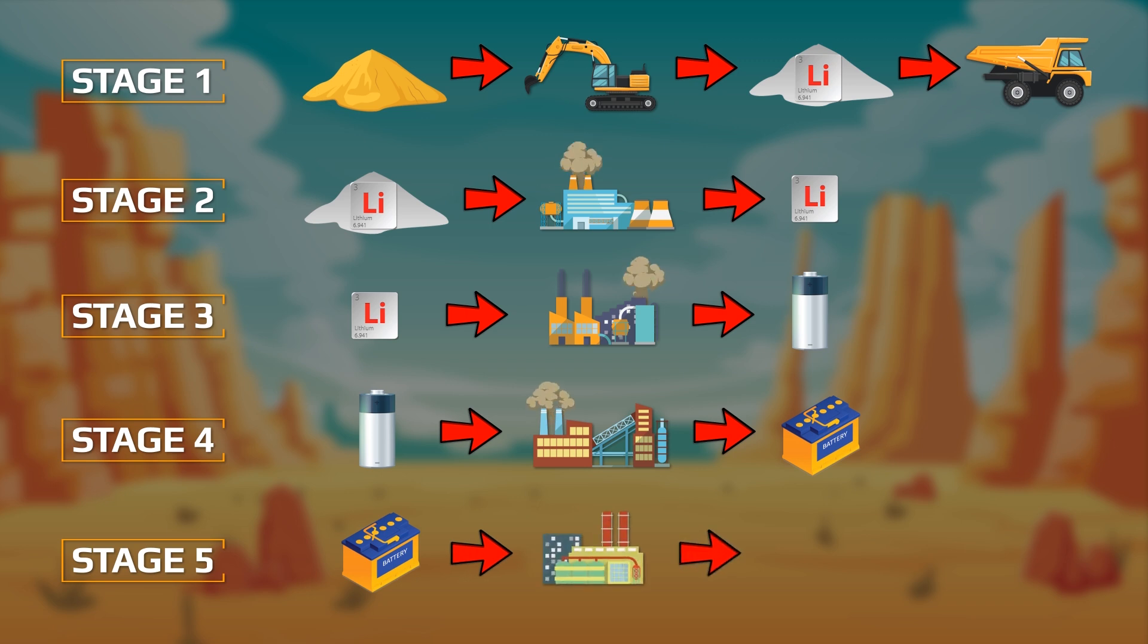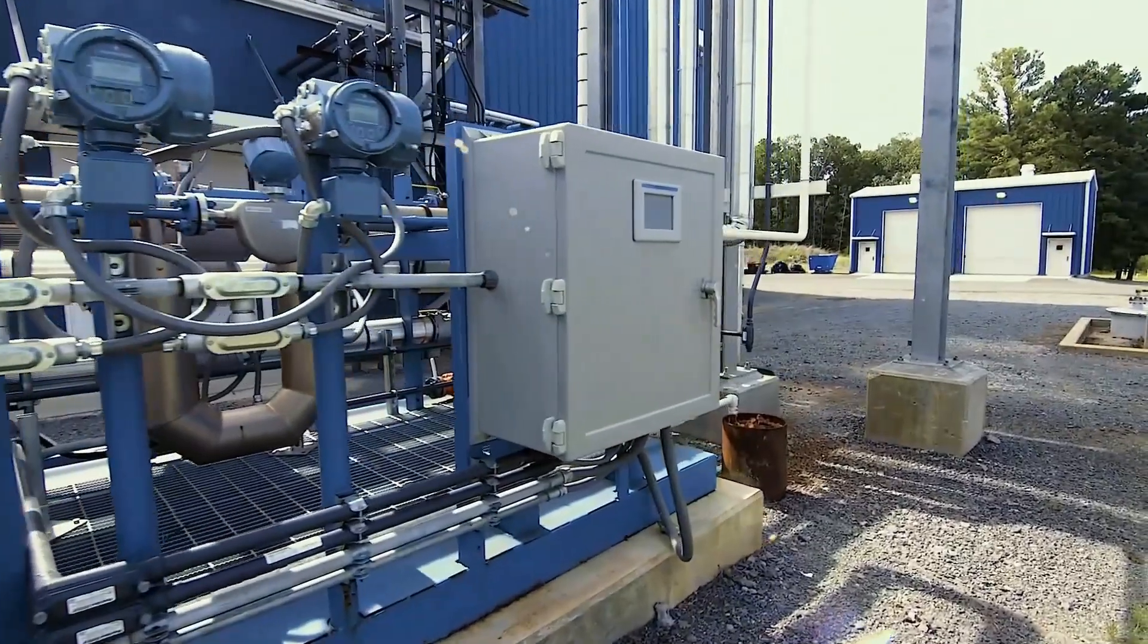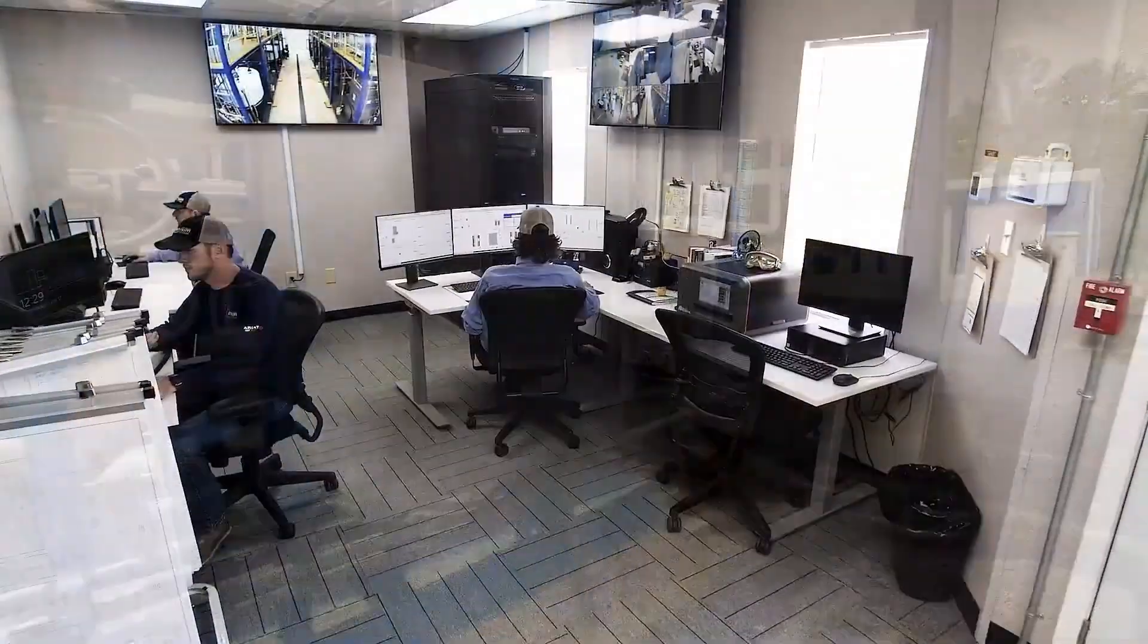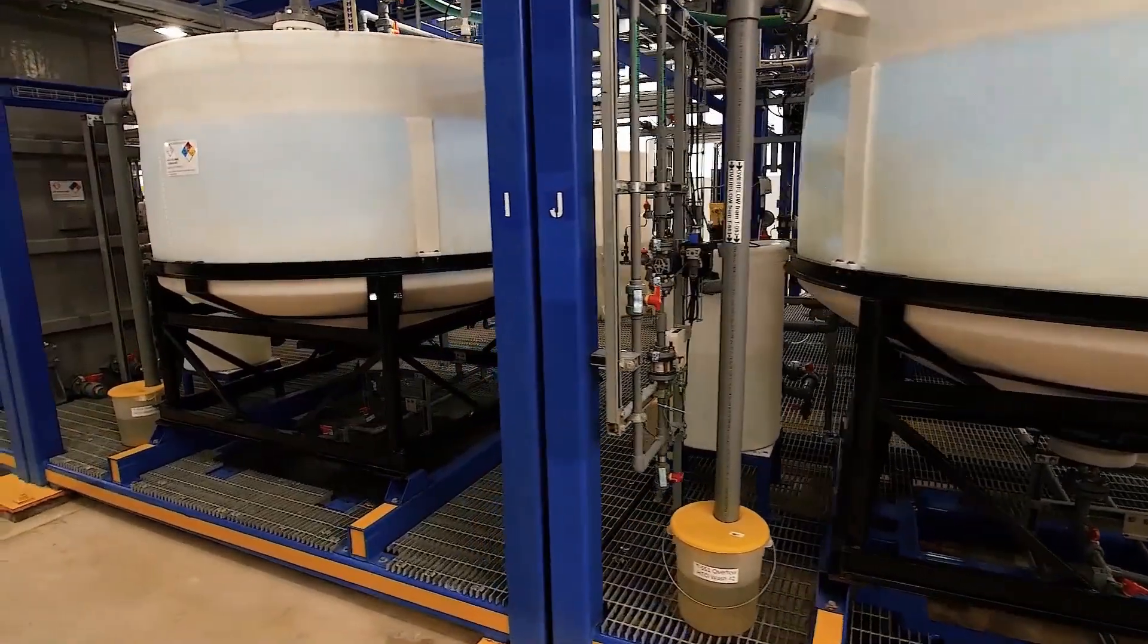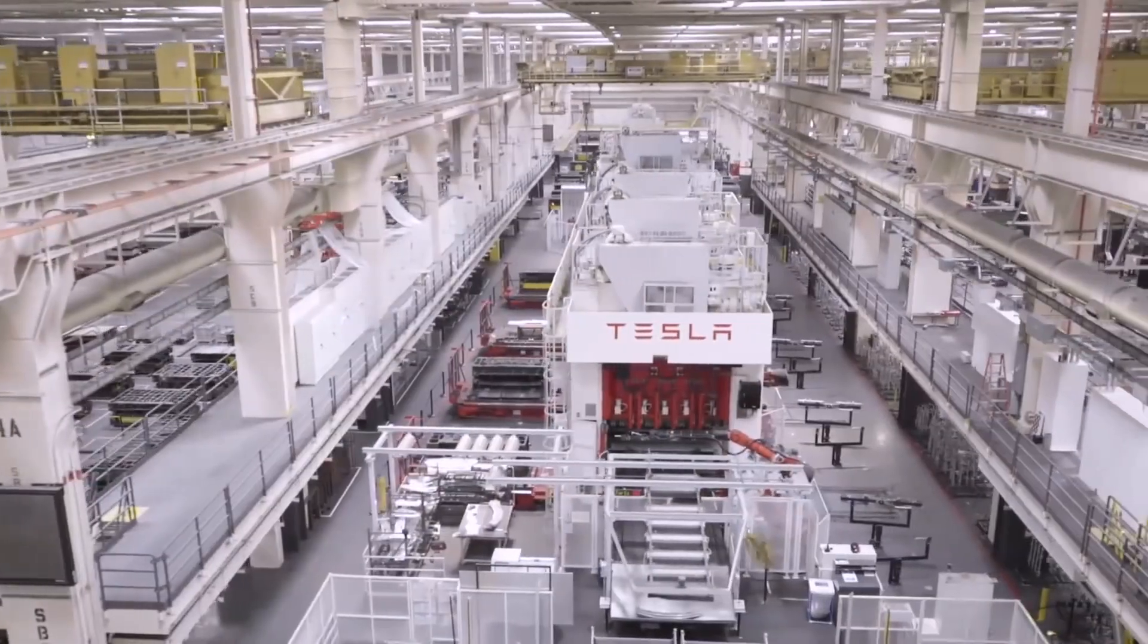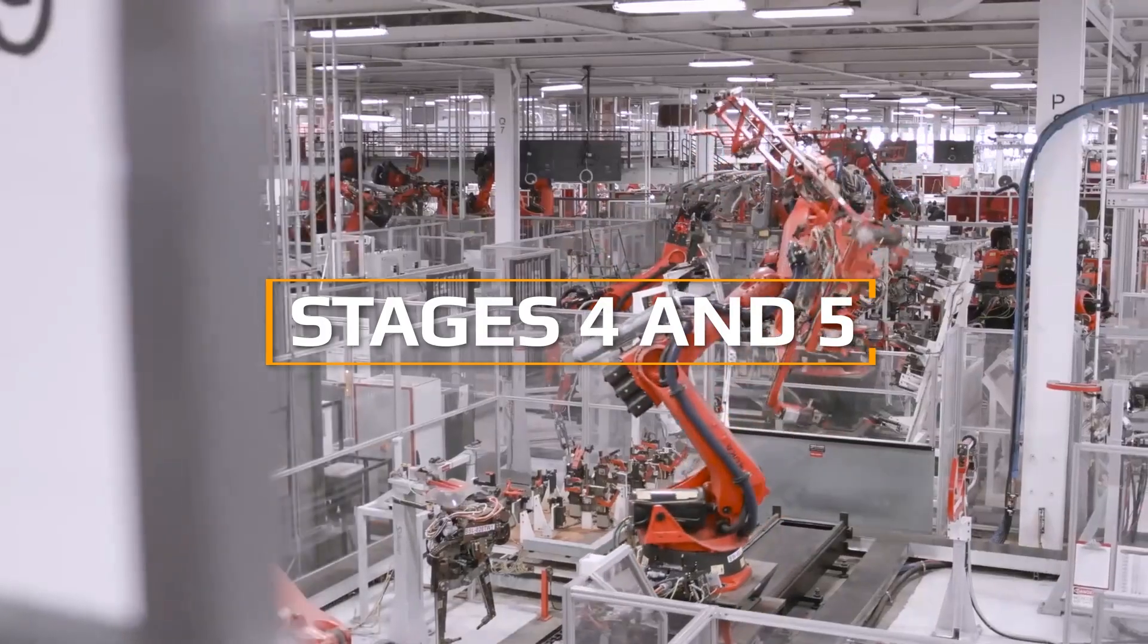All stages are unrelated and are independent businesses located in different parts of the world. This is how stages controlled by different owners take place in different countries on different continents. For example, Elon Musk's auto making companies are stages 4 and 5.